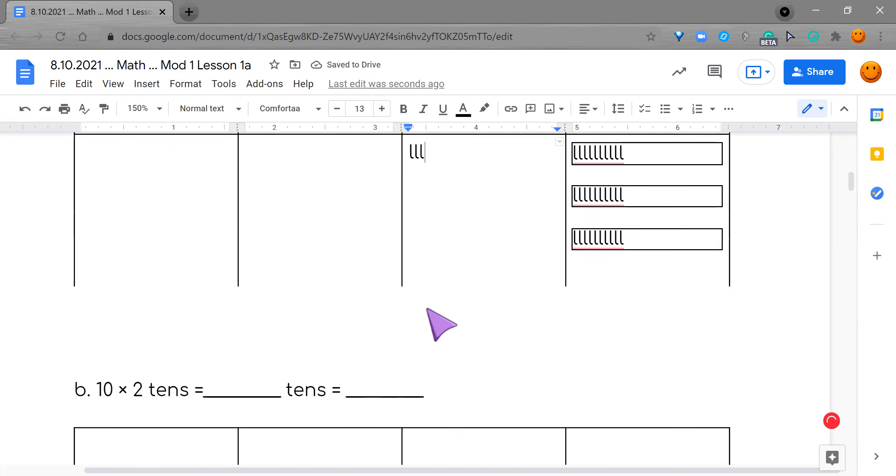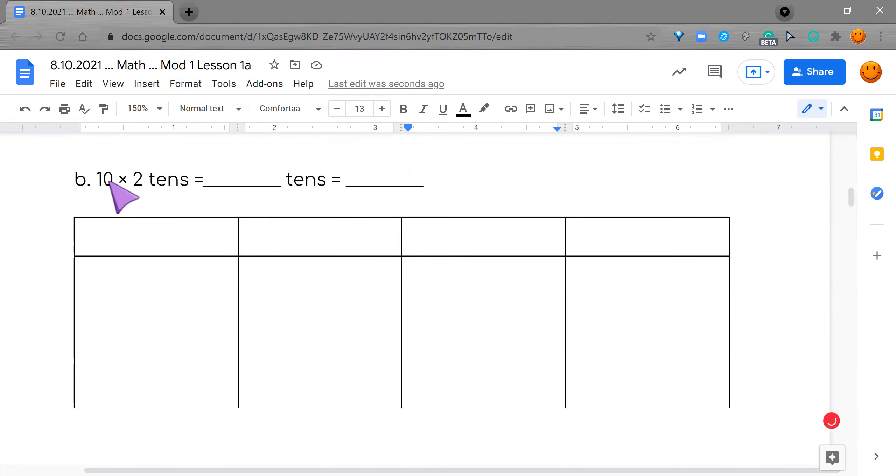So now let's go to number B and figure this one out. We have 10 times two tens. Right. It is 20. And then over here. Right. It is 200. So let's quick label this. We have ones, tens, hundreds, thousands.